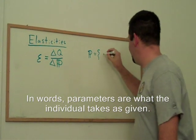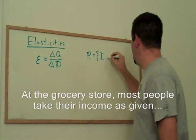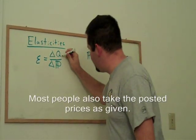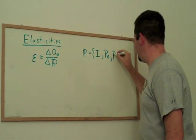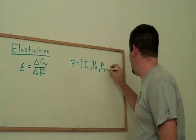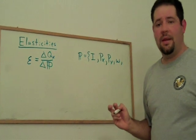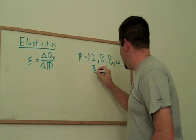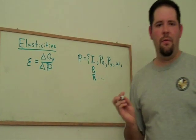Like, for example, you might think that income is a parameter. You might think that the price of good x, here I'm going to go ahead and put an x here, is a parameter. You might think that some other price, say the price of good y, is a parameter. You might think that someone's wage is a parameter. We might think that something like the relative price is a parameter, and so on and so forth.